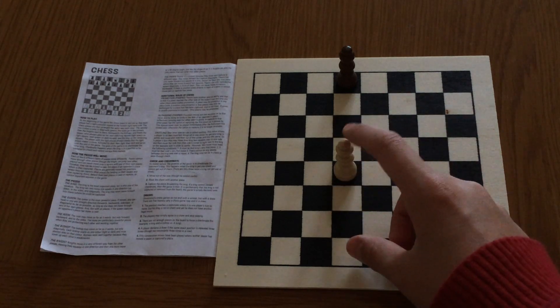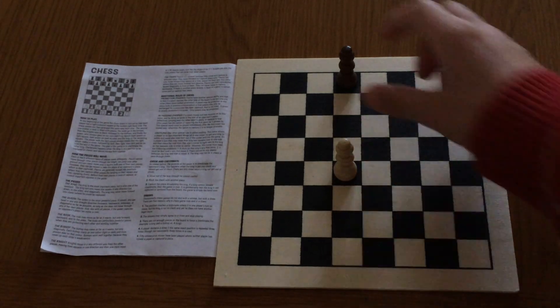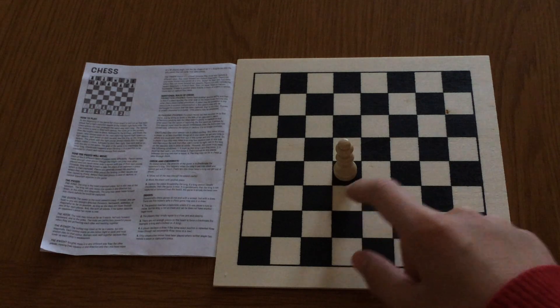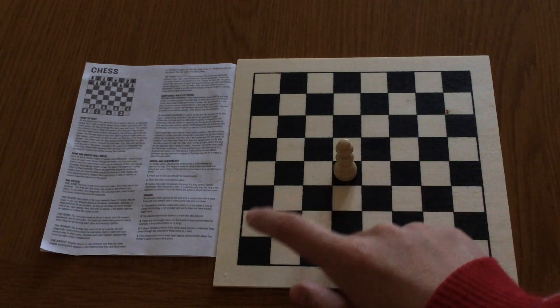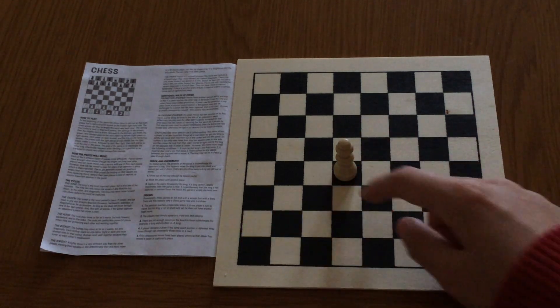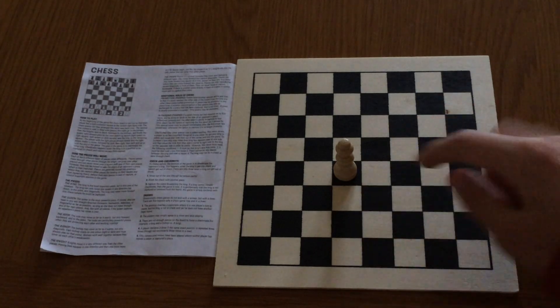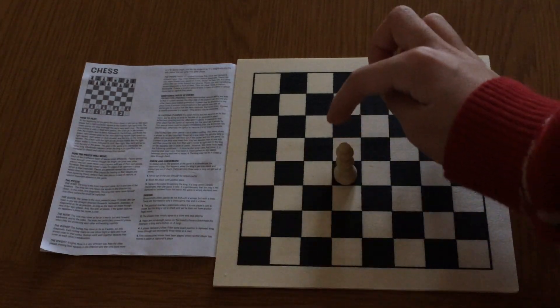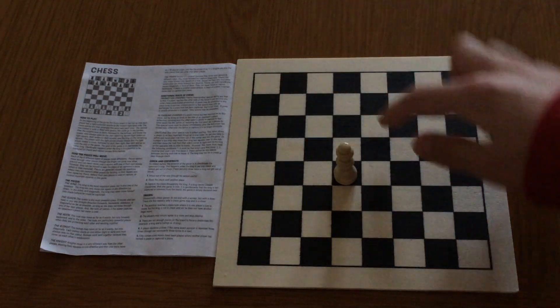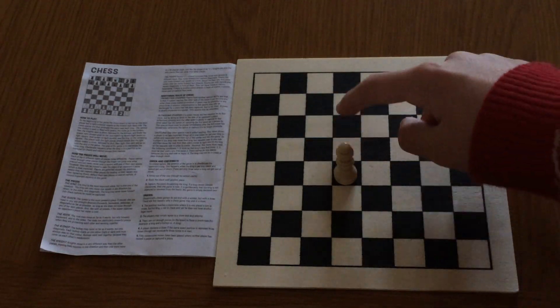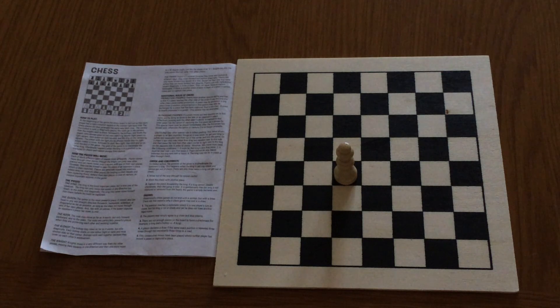If the Queen is in the middle, it controls 1, 2, 3, 4, 5, 6, 7, 8, 10, 11, 12, 13, 14, 16, 17, 18, 19, 20, 21, 22, 23, 24, 25, 26, 27 pieces.